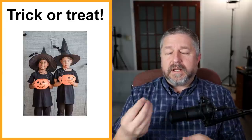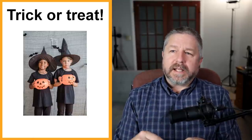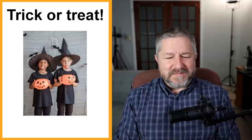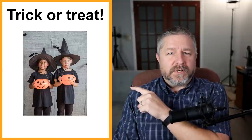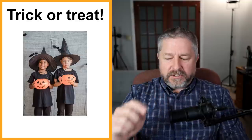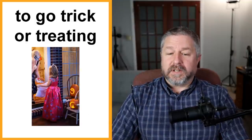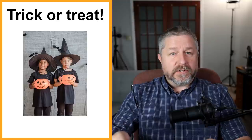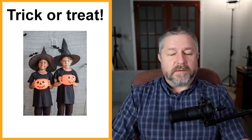A long time ago, trick or treat meant either give me a treat - give me some candy - or I will play a trick on you. But it's not very often that kids actually play tricks on people at Halloween. 99.9% of the time, kids say trick or treat and the person at the house will give them some kind of candy or chocolate. Kids ring the doorbell, when the door opens they hold out their Halloween bag and say trick or treat, and then the person gives them some kind of candy.